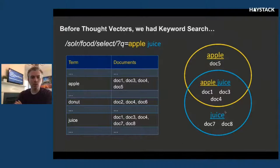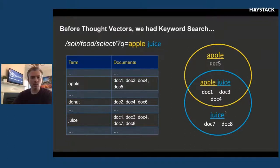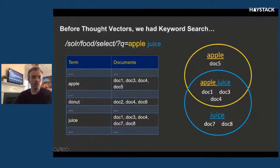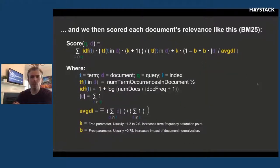This is an example of an inverted index where I have documents. The documents have keywords in them — the word apple, the word donut, and the word juice are all terms that appear within these documents. We pre-index a mapping of every possible keyword into a postings list of documents that keyword appears in. When somebody searches for apple juice, we look up apple, find all the documents it's in, look up juice, find all the documents that contain juice, and do a set intersection. This is the standard BM25 formula — we score each document relative to those terms to figure out which documents are most related to the query. This is traditional keyword search.